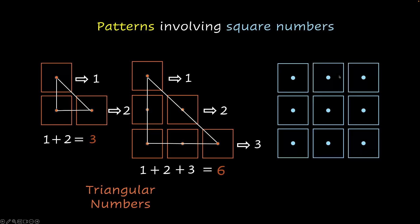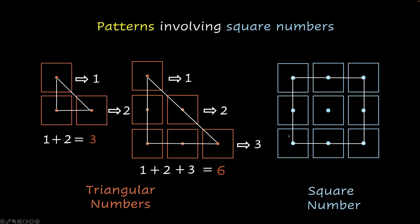Now here we have another kind of configuration. And as you can imagine, if we combine the centers of these blocks, we get a square. And that's why this is known as a square number. What is this number? It's 3 plus 3 plus 3, which is going to give you 9. 9 is a square number.